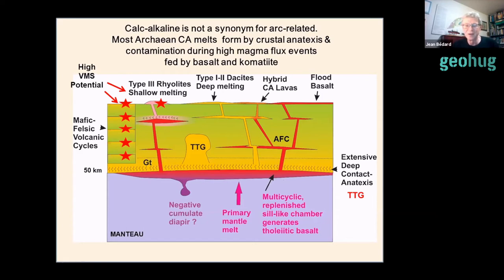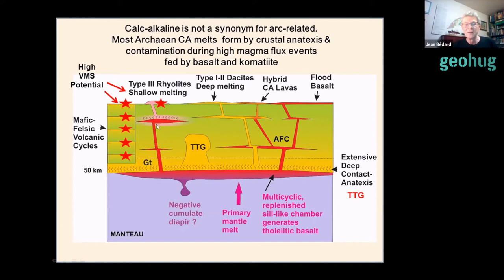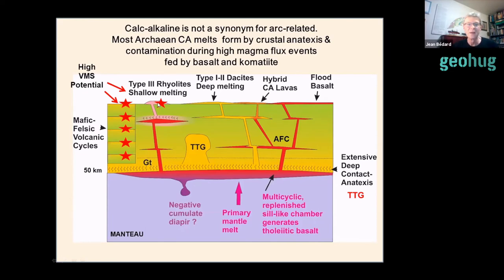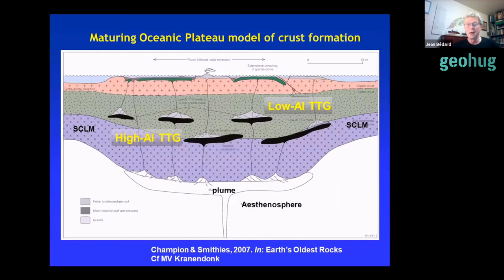Most Archean calc-alkaline melts formed by crustal anatexis and contamination during high-magma-flux events fed by basalts and komatiites that pond at the Moho. They heat the overlying crust in the garnet stability field to form TTGs that can move out as diapirs or segregate to form type-1 dacite flows. The basalts fractionate and can erupt uncontaminated, slightly contaminated, or mix in the conduit to form hybrid magmas, or form shallow chambers — particularly interesting for ore exploration because these shallow chambers are associated with type-3 rhyolites and create a heat engine for hydrothermal circulation, explaining the spatial association between proximal VMS, type-3 rhyolites, and millrock.